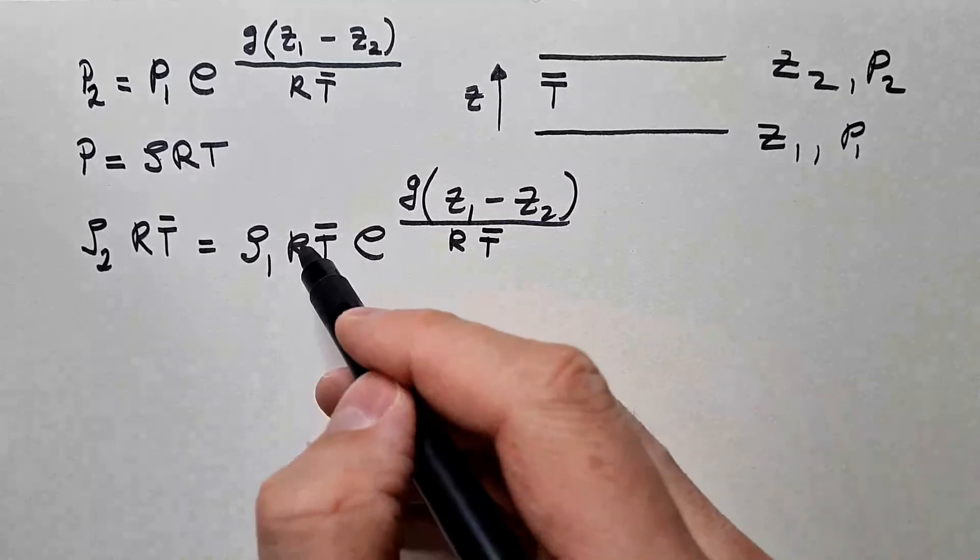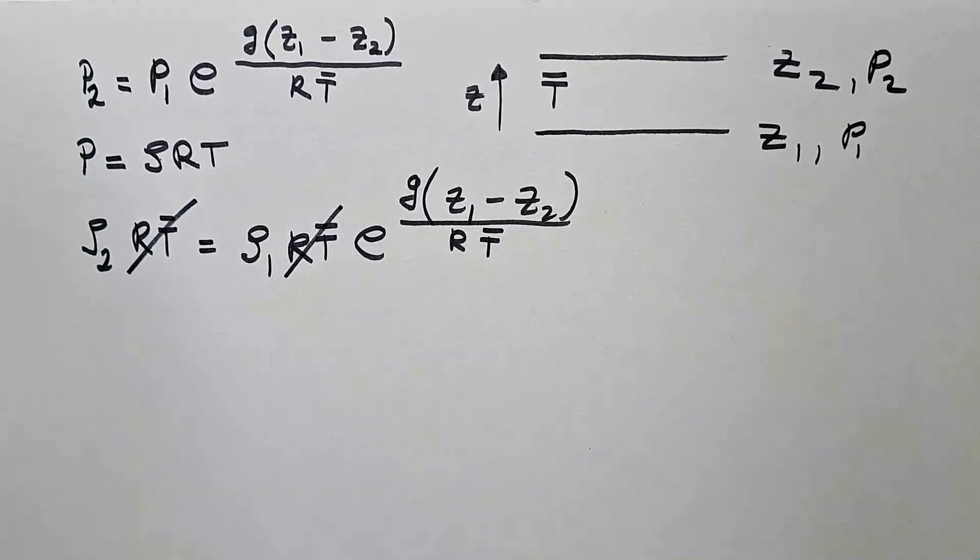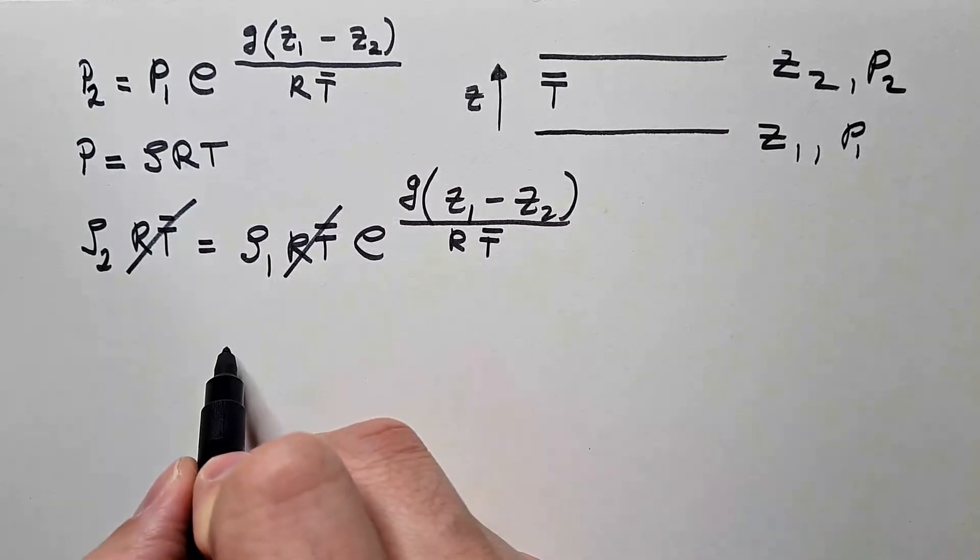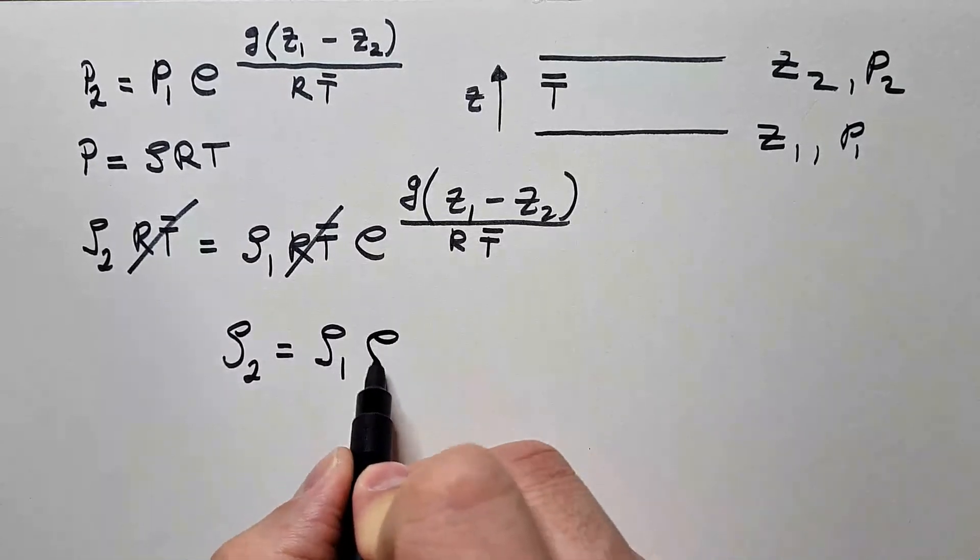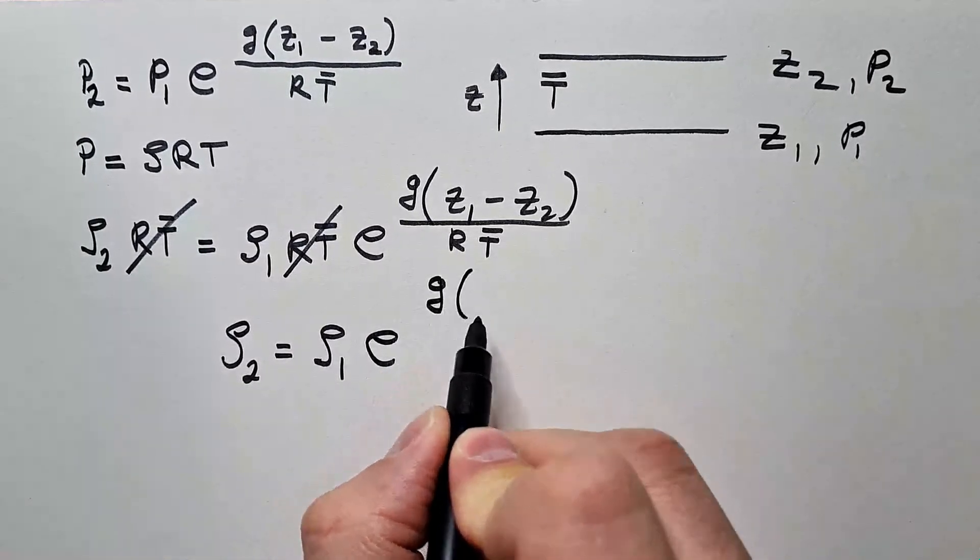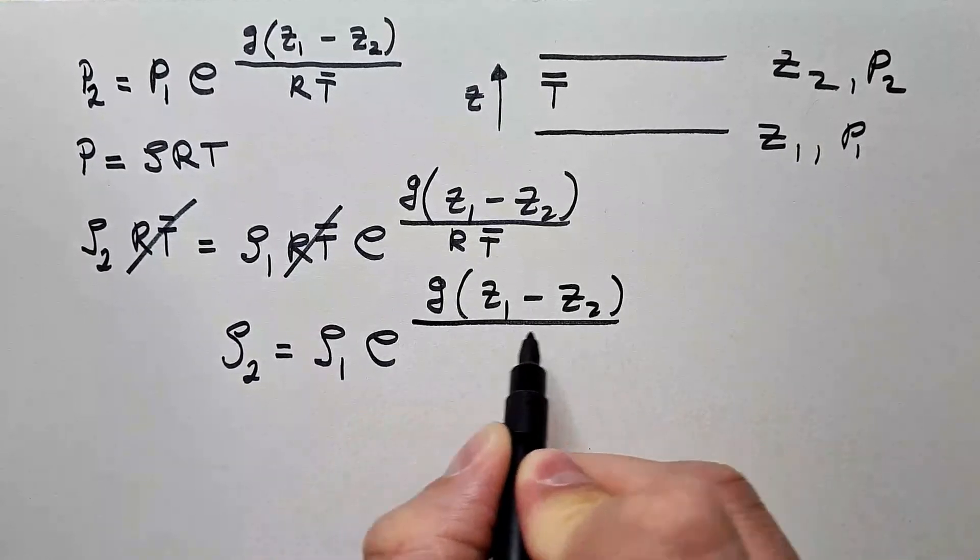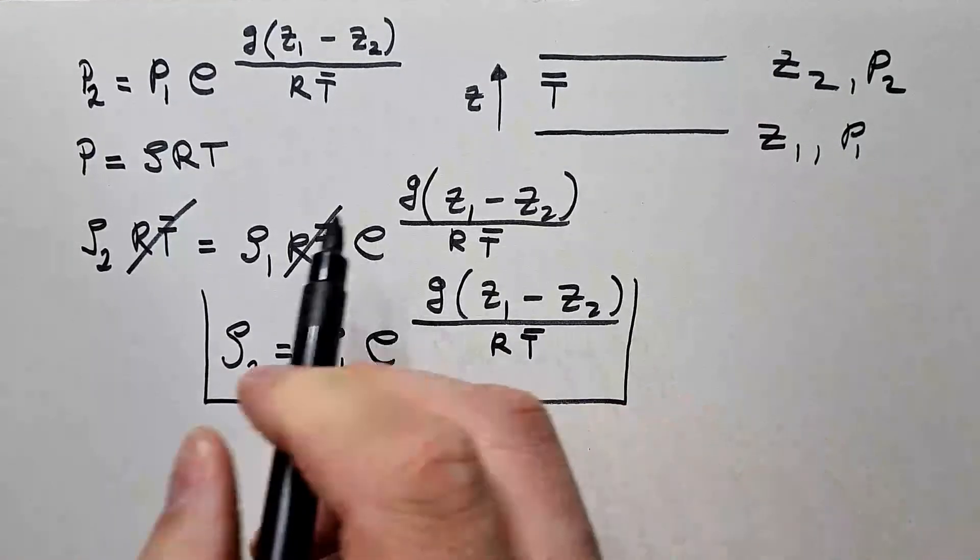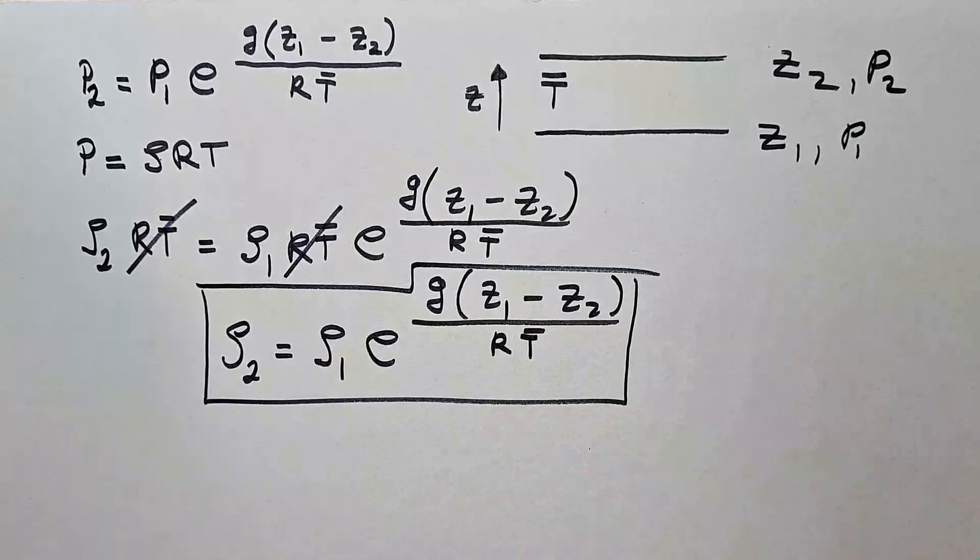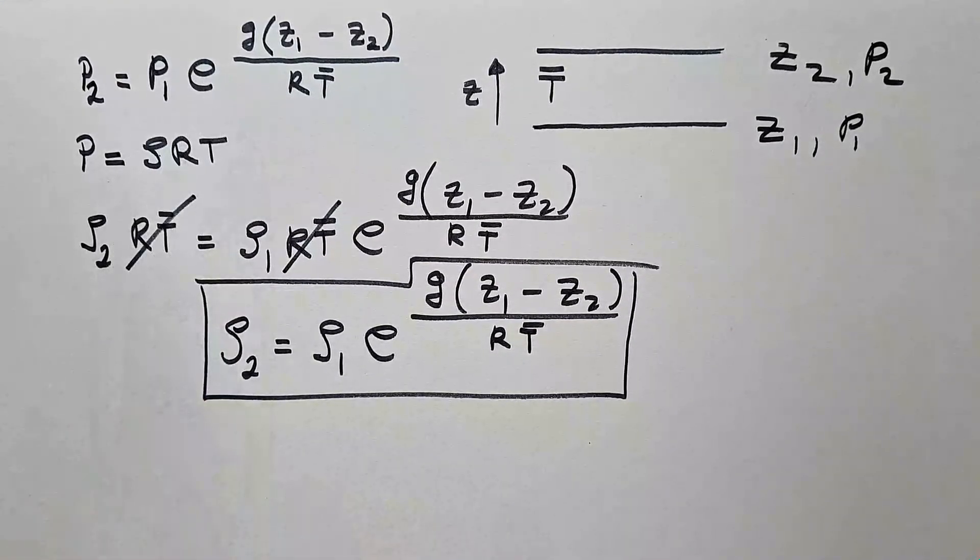You can see I can cancel RT average and RT average and I get that rho 2 is equal rho 1 E to the G Z1 minus Z2 divided by RT average. And this is how density changes with height. You can see that the trend is exactly the same as the trend of the pressure.